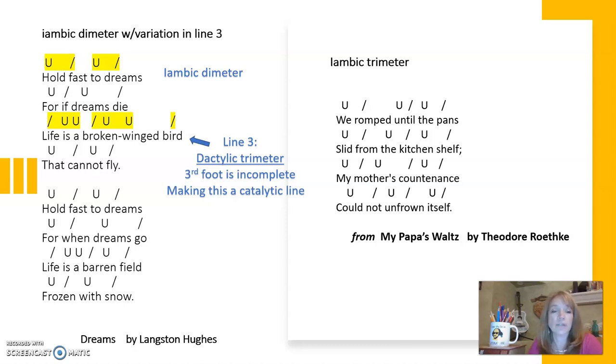But for example, in line three of each of the stanzas, that meter is interrupted or broken, which goes along with the idea of the poem. And in fact, even the line in the first stanza is broken. It is an example of a catalytic line where the last foot is incomplete. So we have the stress syllable for the third dactyl, but then there's no finish.